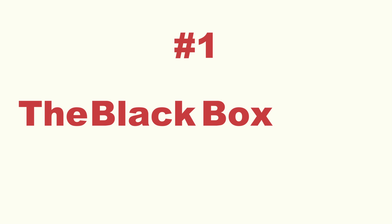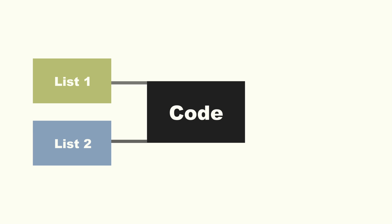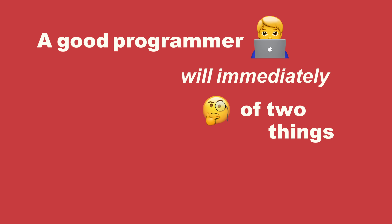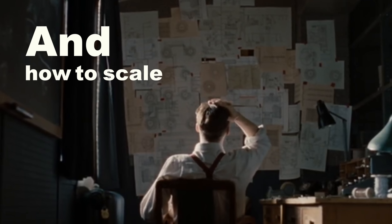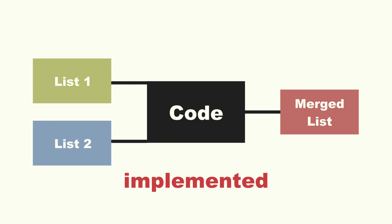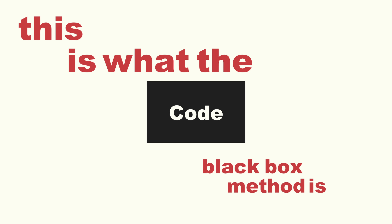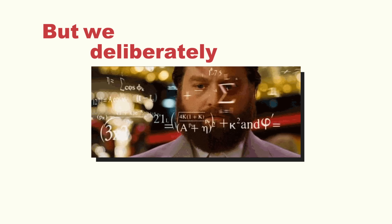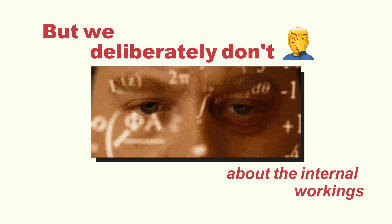The black box method. Let's say you need to develop some code that takes in two lists and outputs the merged results of these two lists. A good programmer will immediately think of two things: how to test this code, and how to scale. Notice how we haven't actually implemented any code yet. This is what the black box method is — we know the inputs and outputs of our code, but we deliberately don't worry about the internal workings just yet.